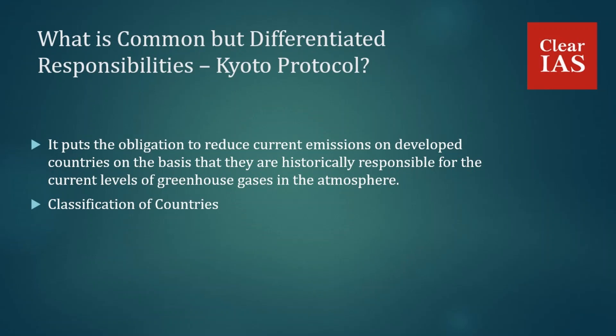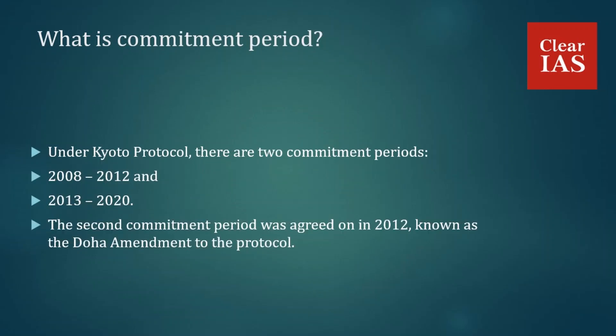Under the Kyoto Protocol there are two commitment periods: 2008 to 2012, and 2013 to 2020. The second commitment period was agreed on in 2012, known as the Doha Amendment to the protocol. Each commitment period has its own binding targets set for developed countries to reduce their greenhouse gas emissions.